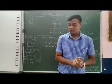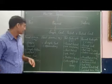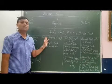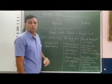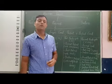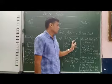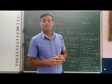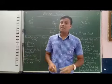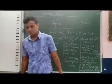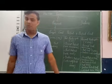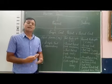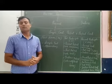Present form of the verb is V1. Past form of the verb is V2. Past participle form of the verb is V3. And present participle means verb with -ing. Based on these four verb forms and helping verbs, we can identify the tense of the sentence.